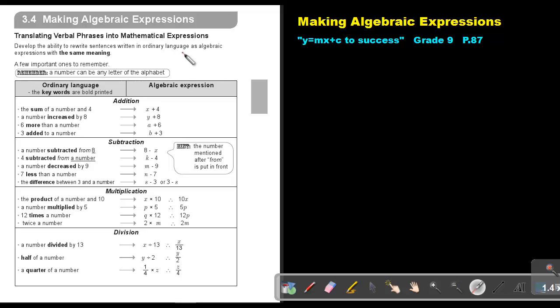Translating verbal phrases into mathematical expressions. Develop the ability to rewrite sentences written in ordinary language as algebraic expressions with the same meaning. Here's a few important ones to remember. A number can be any letter of the alphabet. It can be x, y, z, a, b, any letter of the alphabet. The ordinary language, the keywords are bold printed. The sum means add, of a number and 4. So I don't know that number, so let's call it x. x plus 4. It can also be 4 plus x. A number increase by 8. Increase means addition. So it can be y plus 8 or 8 plus y. 6 more than a number. More means add. So any alphabet letter plus 6. 3 added to a number, so that will be b plus 3.